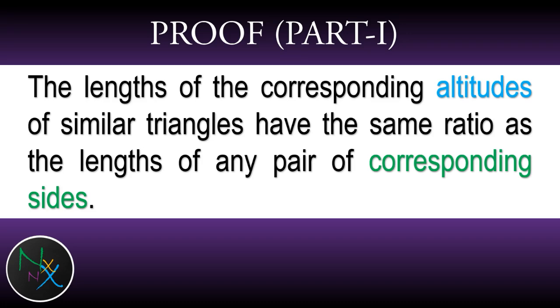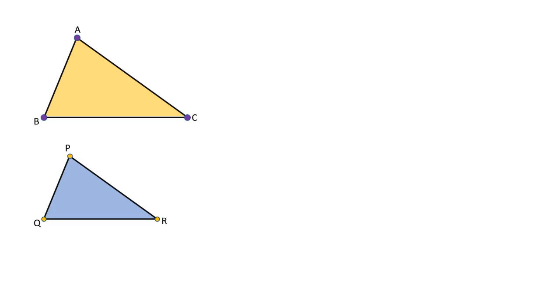So let us prove this statement. Suppose triangle ABC and triangle PQR are given similar triangles. Suppose AD is perpendicular drawn from point A to BC, and PS is perpendicular drawn from point P to QR. Then we have to prove that AB over PQ is equal to AD over PS.